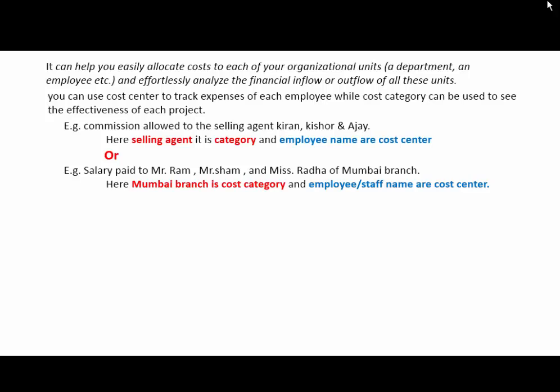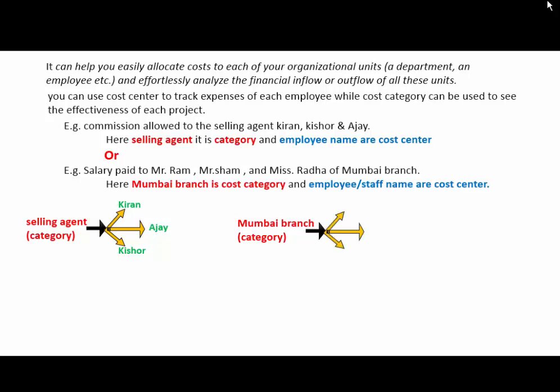The one entity is considered the cost category, and under it all sub-entities are called cost centers. For example, if we take a fixed assets category, the building, land, and premises are cost centers. Here, the selling agent is the cost category and under this category there are different commission agents like Kiran, Ajay, and Kishore. Or under a branch setup, the branch name is the category, and the employee or staff name is under the cost center — Ram, Shyam, and Radha are the cost centers and Mumbai branch is the category.